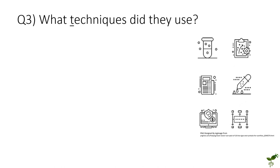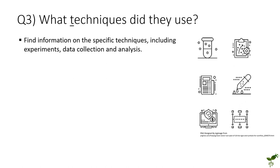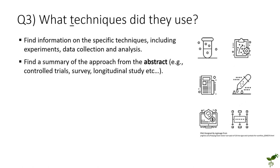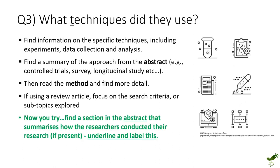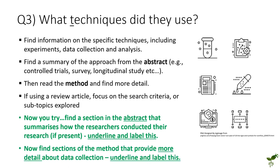The third stage is T for Techniques. This is a really important but often difficult part of the article to interpret. We're looking for information on specific techniques, experiments, data collection, and analysis. Start with the abstract, where occasional terms may be mentioned, but you'll need to go into the method section for more detail. The method will give you specifics on how those techniques were actually implemented. If you're using a review article, focus on the search criteria or subtopics. Even if you don't know the name or meaning of a technique, label and identify it, and look it up later in context.